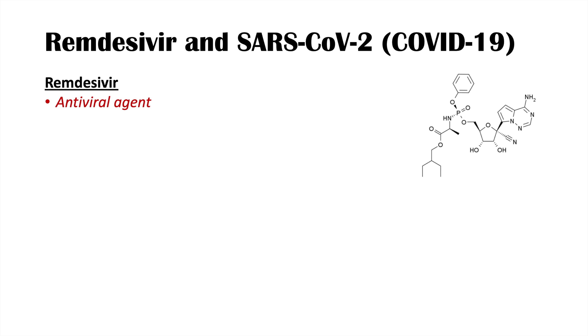So what is remdesivir? Remdesivir is an antiviral agent, but more specifically it is a prodrug of something we call GS441524. A prodrug is an inactive form of the medication that, when administered into the body, becomes metabolized into an active form. The active form in this case is GS441524, which is an adenosine analog.